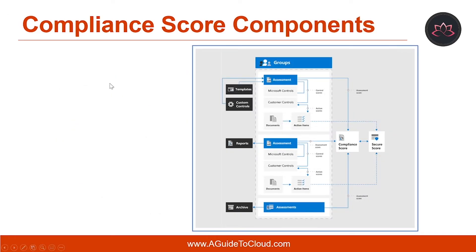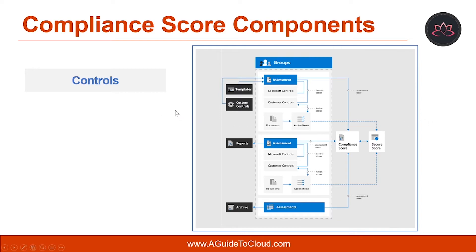Let's talk about the compliance score components. Compliance score uses several components to help you manage your compliance activities. As you use compliance score to assign, test, and monitor compliance activities, it's helpful to have a basic understanding of these key components. This example diagram shows the relationship among these components. First, let's talk about controls. A control defines how you access and manage system configuration, organizational process, and people accountability to meet a specific requirement of a regulation, standard, or internal policy. The compliance score tracks two types of controls: Microsoft Managed Controls and Customer Managed Controls.